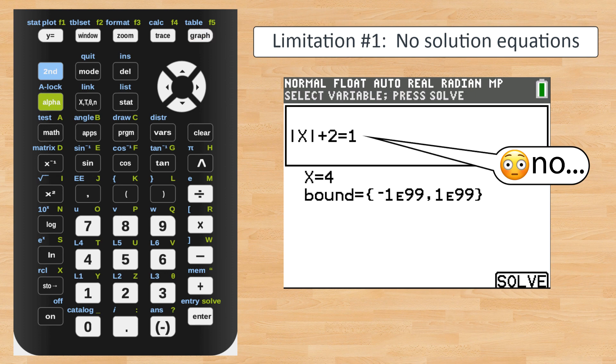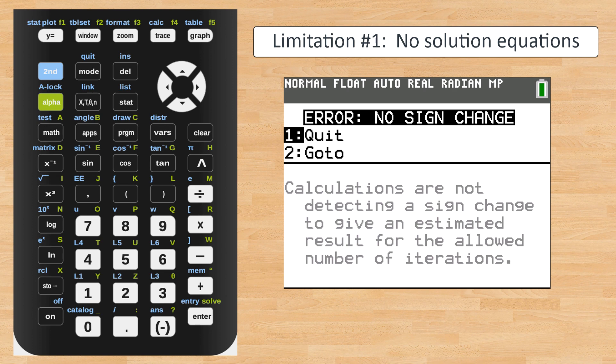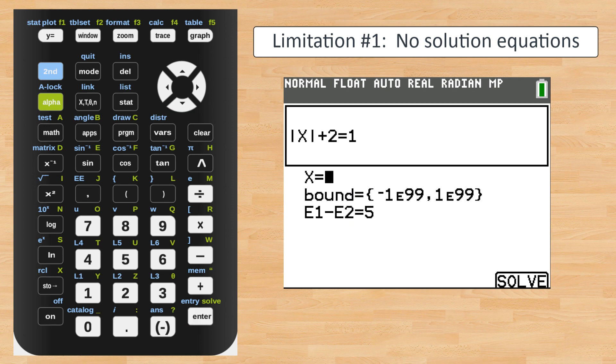When we ask it to solve this, it does some computing for a second or two and then we get this error message: no sign change. That's the calculator's way of saying it looked all over the number line to find something and came up empty handed. And rightly so, this is a no solution equation.